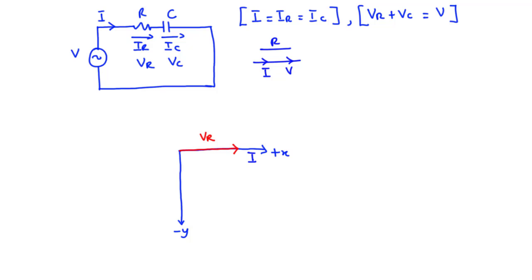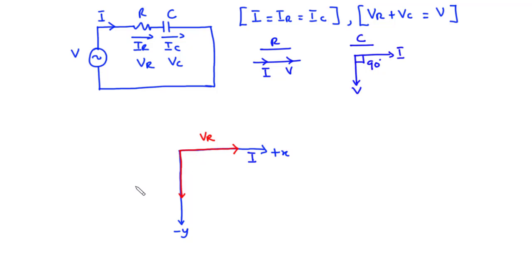Considering the capacitor, the current leads the voltage by 90 degrees. So the voltage VC lags the current I and lies on the negative Y axis, lagging I by 90 degrees. The resultant phasor is the supply voltage, and the phase angle between the current and the voltage is shown in the diagram.